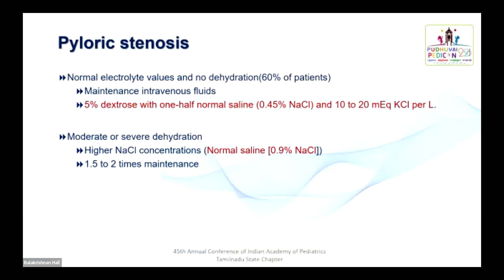In pyloric stenosis, 60% of patients present with normal electrolyte values. In those cases, maintenance IV fluid alone is sufficient — 5% dextrose with half normal saline and 10–20 mEq/L of KCl. For moderate to severe dehydration, higher NaCl concentration is needed — normal saline at 1.5–2 times maintenance is recommended.